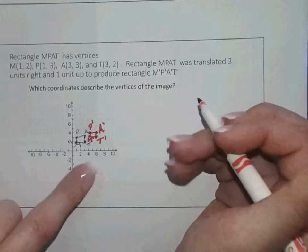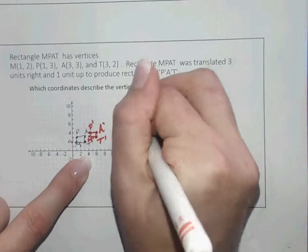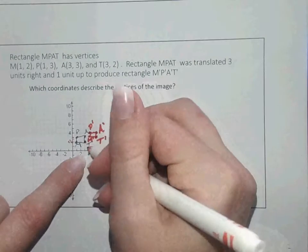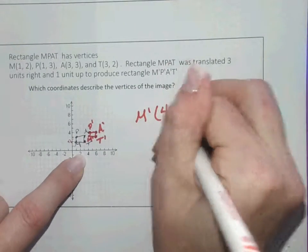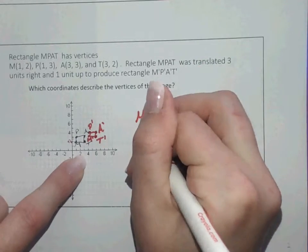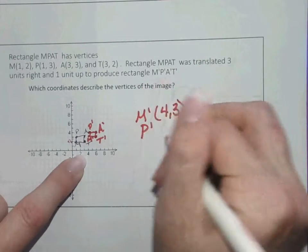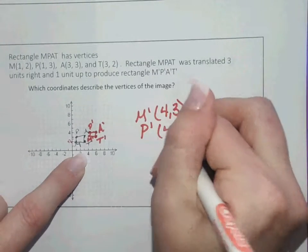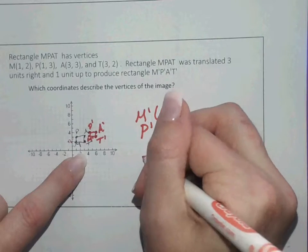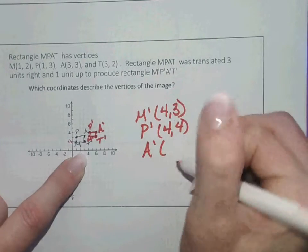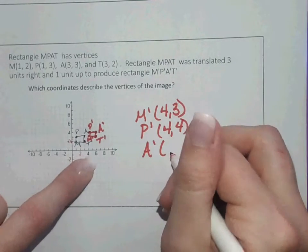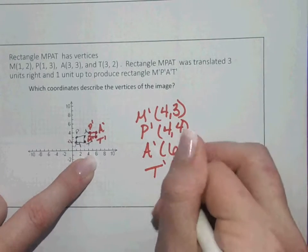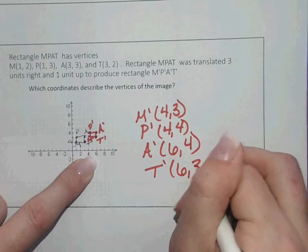So which coordinates are these? You're going to look and you're going to say M-prime is 4, 3. P-prime is 4, 4. A-prime is 6, 4. And T-prime is 6, 3.